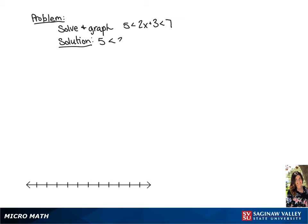We have 5 is less than 2x plus 3, and 2x plus 3 is less than 7.